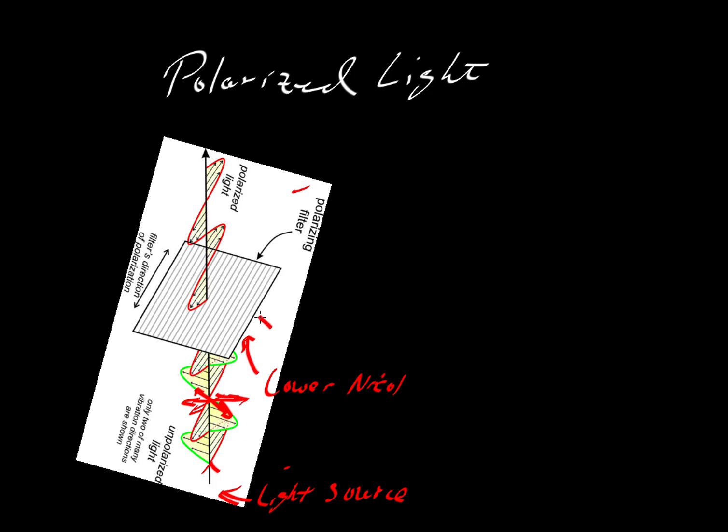So notice that the way that the nickel is illustrated here, it only passes light relative to our view here that vibrates in a north-south direction. So all of these vibrations are being blocked except for one, and that's this one that is vibrating here in the north-south direction, that red component of the beam that's shown here.